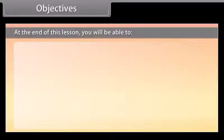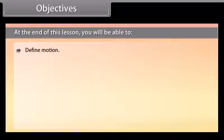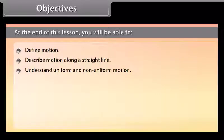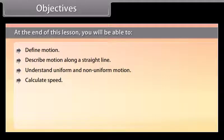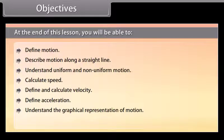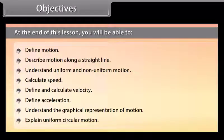Objectives. At the end of this lesson, you will be able to: define motion; describe motion along a straight line; understand uniform and non-uniform motion; calculate speed; define and calculate velocity; define acceleration; understand the graphical representation of motion; explain uniform circular motion.